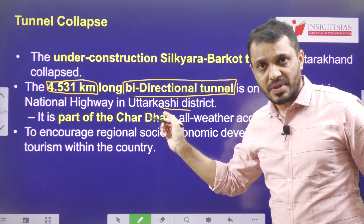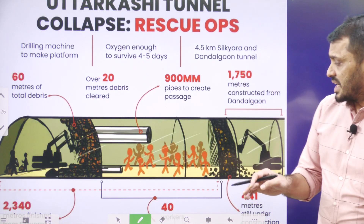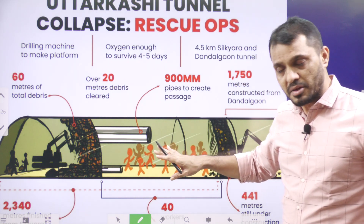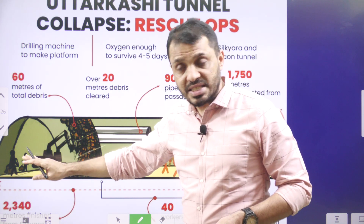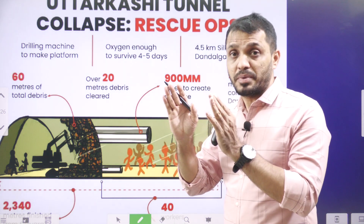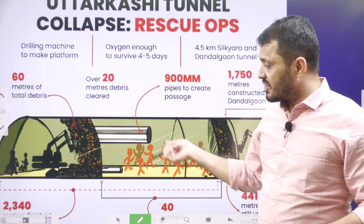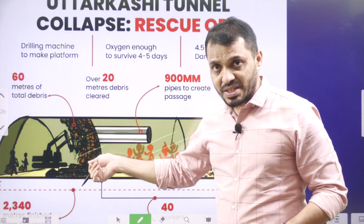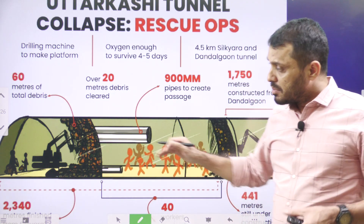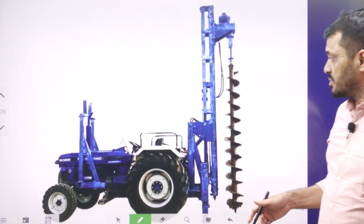The tunnel is on the Yamunotri National Highway. This tunnel collapsed and workers got trapped inside. From one end, NDRF authorities started drilling through the tunnel, sending a central pipe. The idea was that workers would exit through that pipe using stretchers, and NDRF people would bring them out safely.